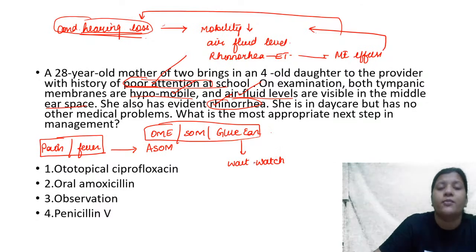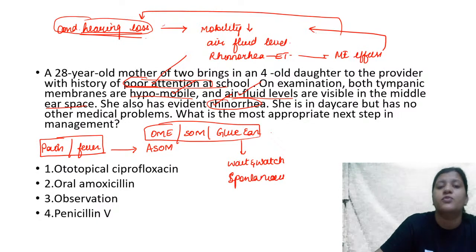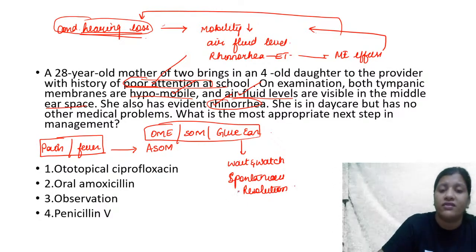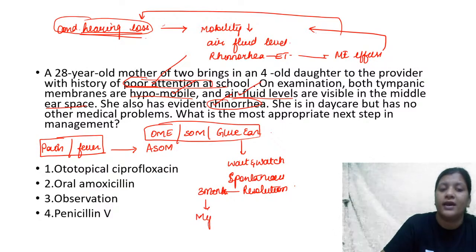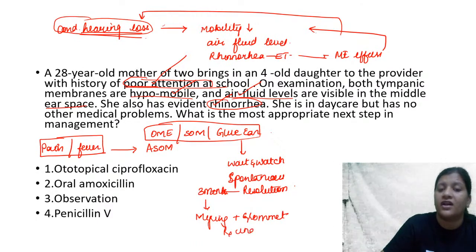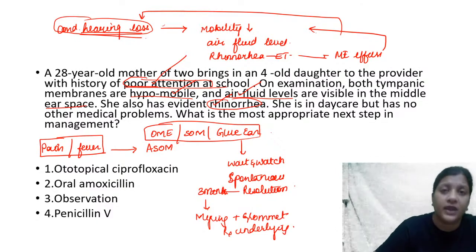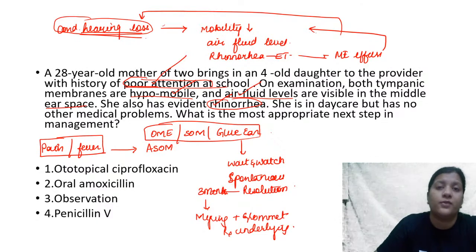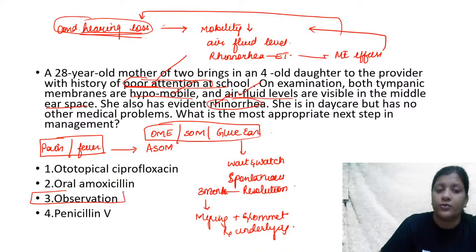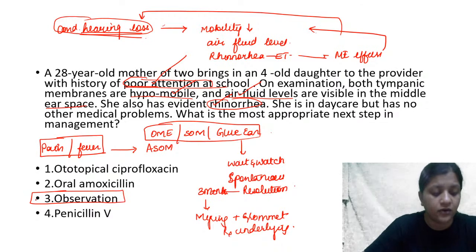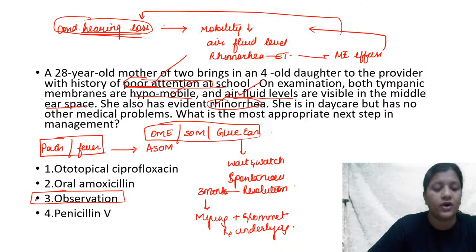The treatment for otitis media with effusion — serous otitis media or glue ear — is wait and watch with medical therapy: decongestants and maybe steroids, expecting spontaneous resolution. You wait and watch for three months. If symptoms persist beyond three months, you do myringotomy plus grommet and treat the underlying cause of eustachian tubal obstruction — adenoid, nasal obstruction, or deviated nasal septum. The answer here is observation.